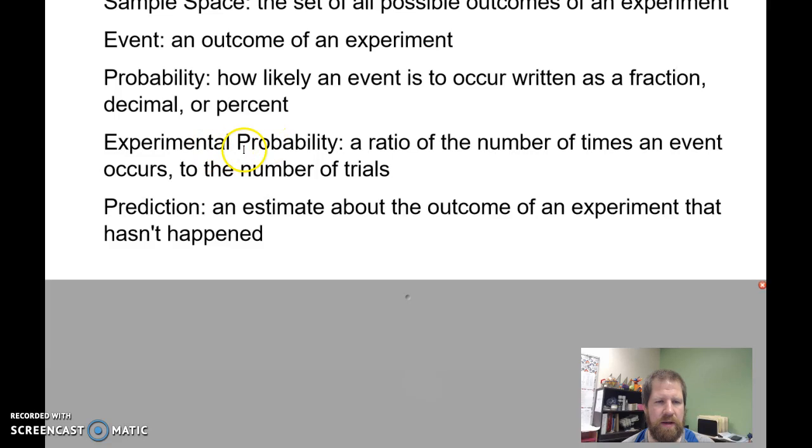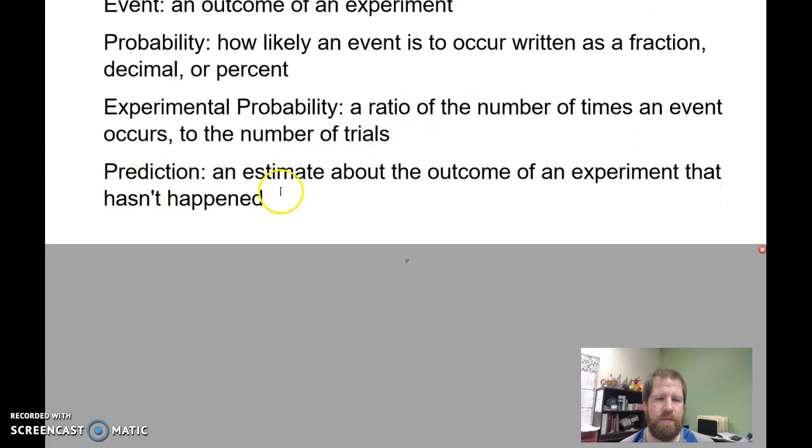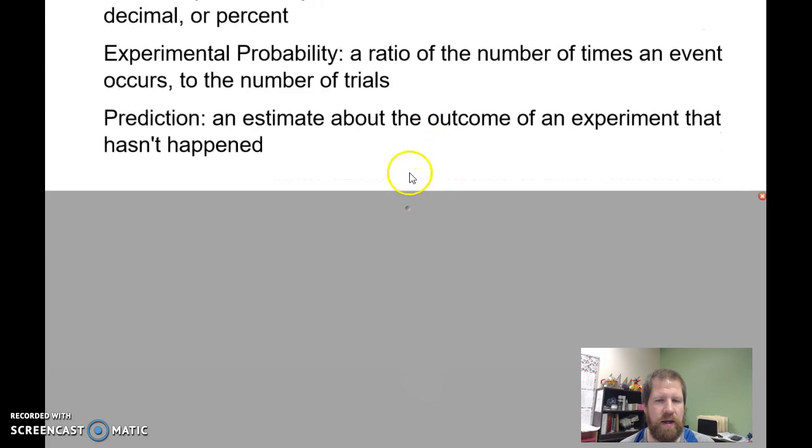Experimental probability. That is, instead of just saying there's a 1 in 6 chance of me rolling a 2 on a standard 6-sided die, that is me saying I'm going to roll this die 10 times and see how many times I roll a 2. So I'm conducting an experiment to test out the probability, and then prediction is just your estimate about what's going to happen during an experiment.